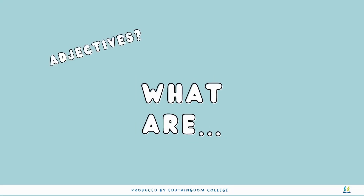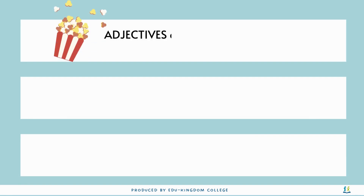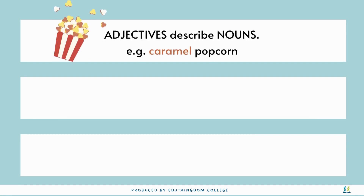First, let's remind ourselves what all these words mean and how they are used. Adjectives are used to describe nouns. They describe what an object looks like, sounds like, or the number of objects.